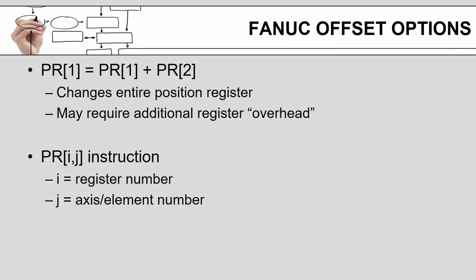And similar to what Mitsubishi does, FANUC says that you can add your variables together to get a new position variable. FANUC also offers an option where you can control just a single axis or element of that position register, which can be really handy for some applications such as palletizing.